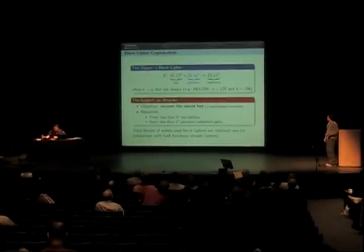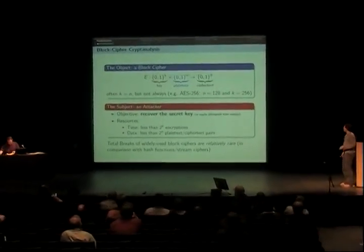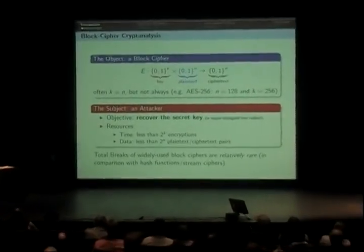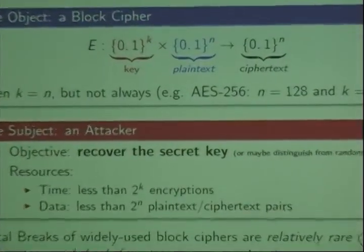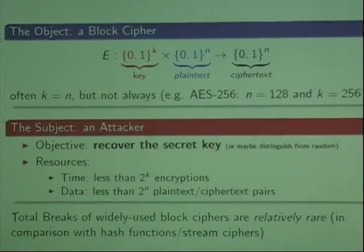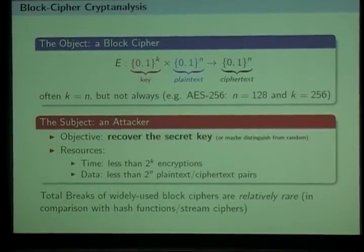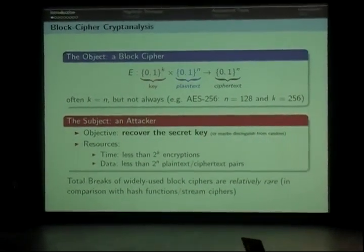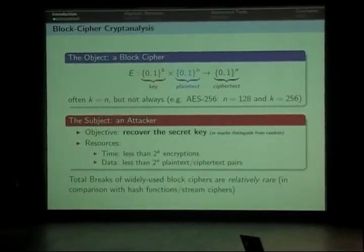First recall that a block cipher is in fact a family of permutations indexed by a key, and we hope that these permutations are sufficiently random and independent. So the block cipher takes as input a k-bit key, an n-bit plaintext, and produces an n-bit ciphertext. Often the size of a key doesn't need to be the size of the plaintext.